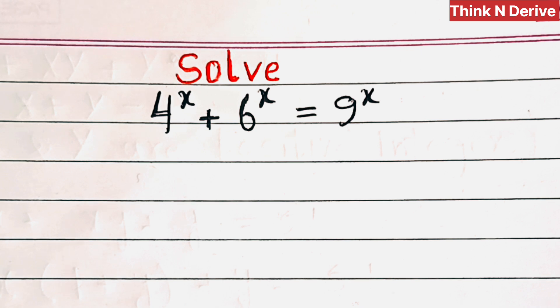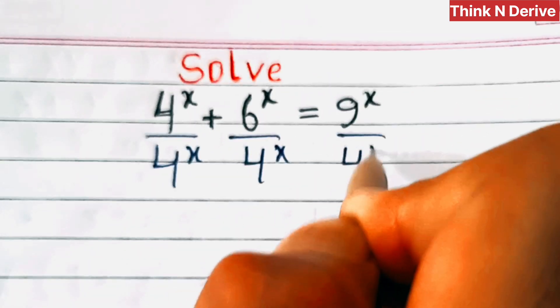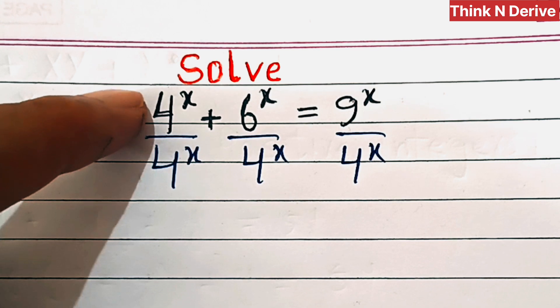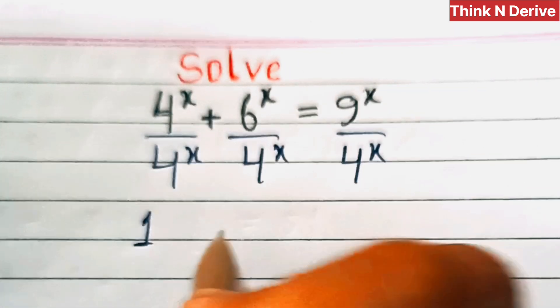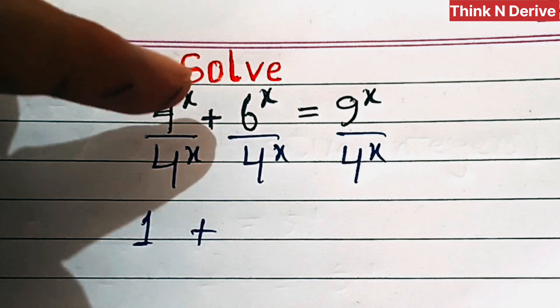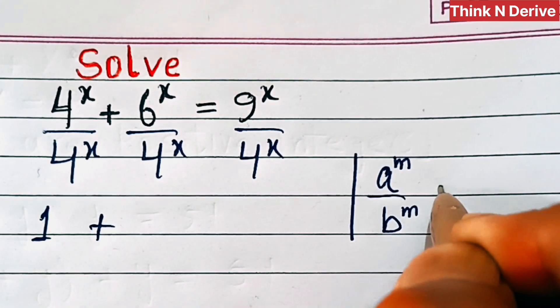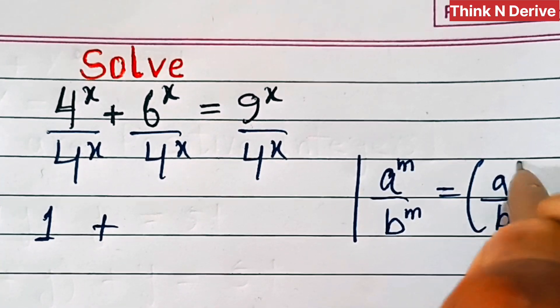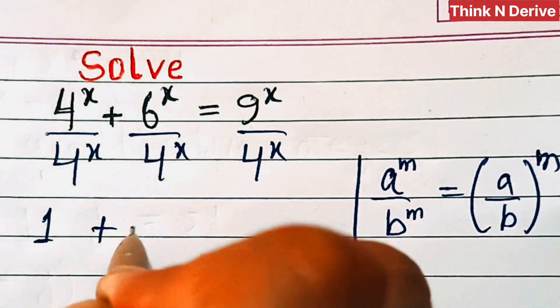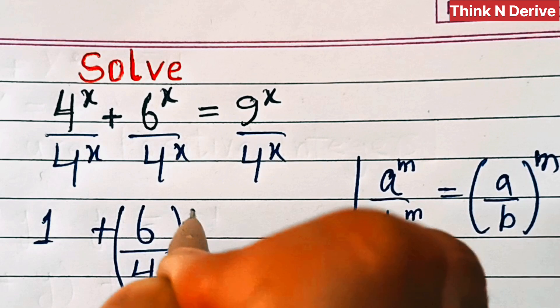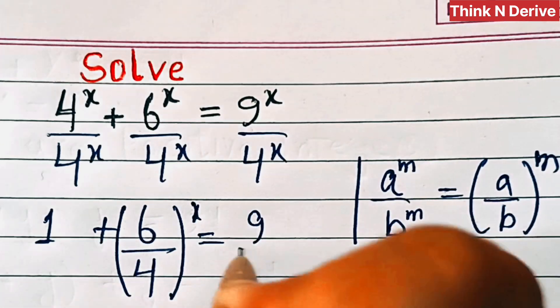So let's divide by 4 power x. Since we have the same terms in numerator and denominator, this will give us 1. For the other terms, we will apply the exponential rule: a power m over b power m is equal to a by b whole power m. So this will give us 6 over 4 whole power x, and similarly 9 over 4 whole power x.